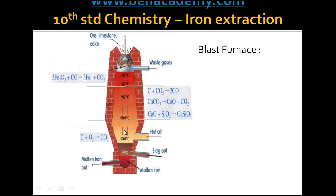Therefore lots of heat energy is produced, almost equal to 1700 degrees Celsius. When this carbon dioxide gas rises up, it reacts with the carbon present in the coke being fed from the top, and this carbon dioxide is converted into carbon monoxide.